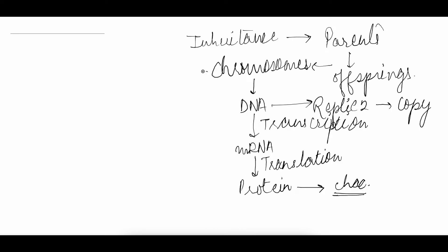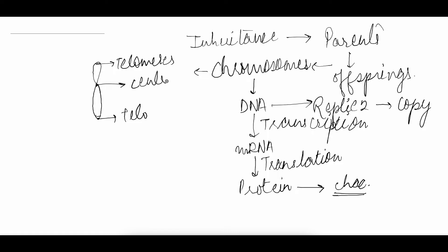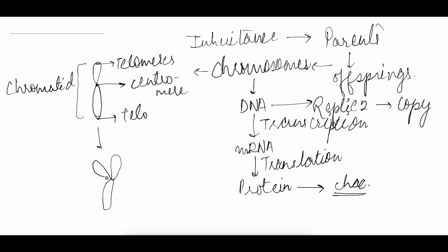Now if we talk about the structure of the chromosome, we can see a structure like this. The ends of the chromosomes are called telomeres, and this constriction is called the centromere, and this structure as a whole is called a chromatid. When it replicates, we get a structure with chromatid number one and chromatid number two — these are sister chromatids.